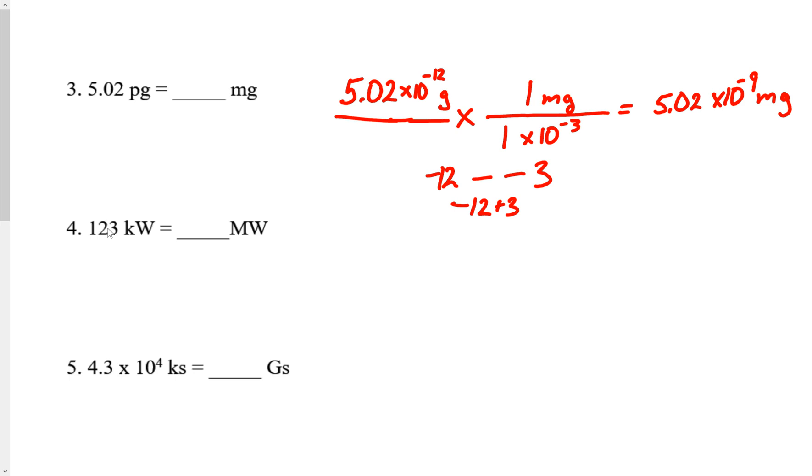How about kilowatts? 123 kilowatts. Kilo stands for times 10 to the 3, so there's 1,000 watts in a kilowatt. Now we'll convert to 1 megawatt. Mega represents 10 to the 6. So 3 minus 6 would be negative 3. That's 123 times 10 to the negative 3 megawatts.